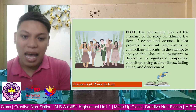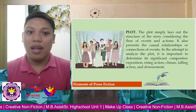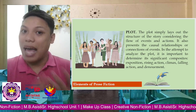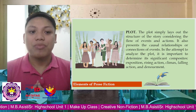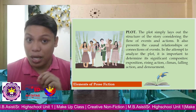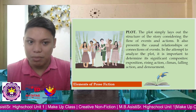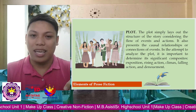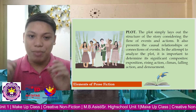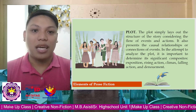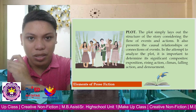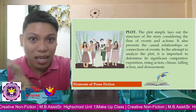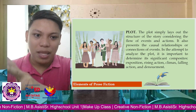The plot also presents the causal relationships or connections of events — why a certain event happened, why another event follows. In attempting to analyze the plot, it is important to determine its significant composites. You know this already from grade 7. You start with the exposition, which talks about how the story opens with the characters and the setting of the story — you have to describe them there.